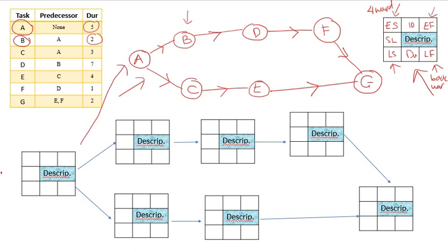So let's start with the first box here. This actually represents this one, the A. So we're going to put all the IDs first in all of these boxes. This is A, and this is B, this is C, D, E, F, and G. And we can fill up the duration. So this is 5, this is 2, C is 3, D is 7, E is 4, F is 1, and G is 2.